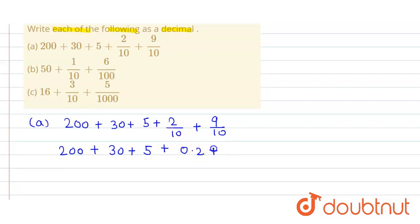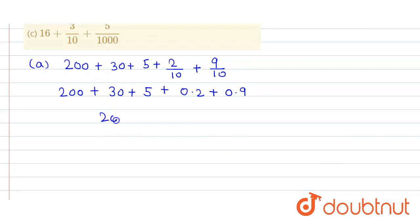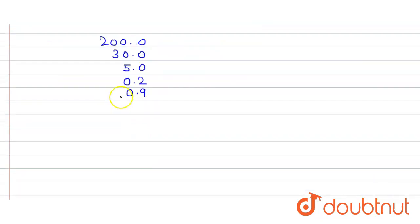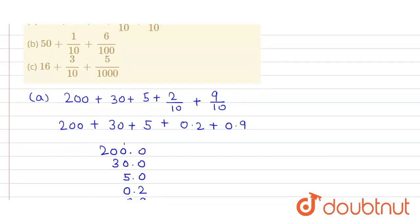So here it is 0.2 plus similarly here we get 0.9 and now we simply add all of these numbers. So here it is 200.0 that one is 30.0, 5.0, 0.2 and then 0.9. So here when we add them, here this 9 plus 2 is equal to 11. So here we get 1 and 1 here. So here it is 5 plus 1 is equal to 6 and here it is 3 and 2. So here we get answer to be 236.1.